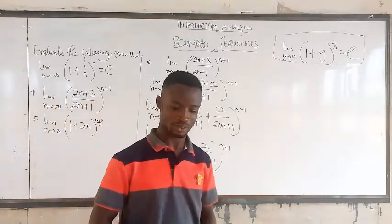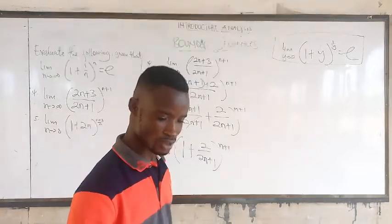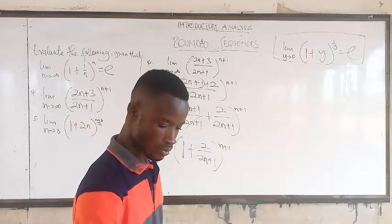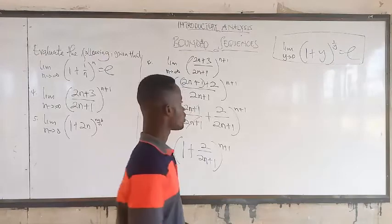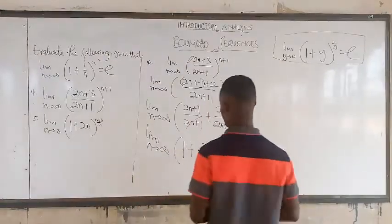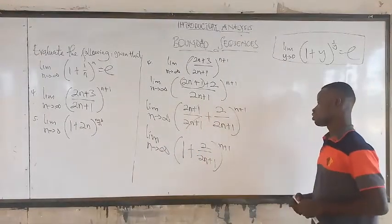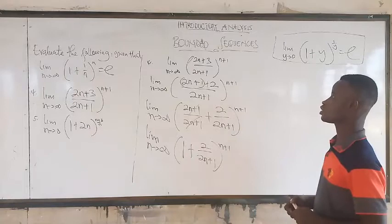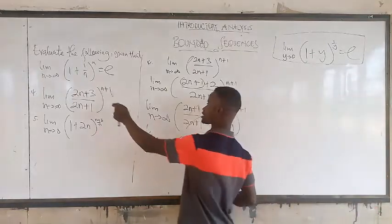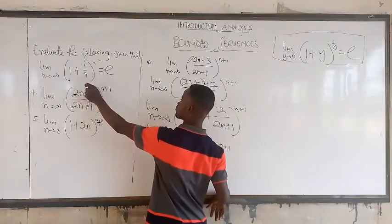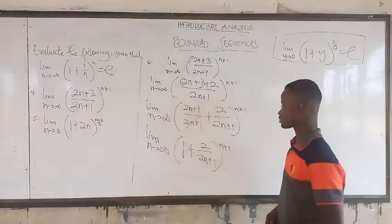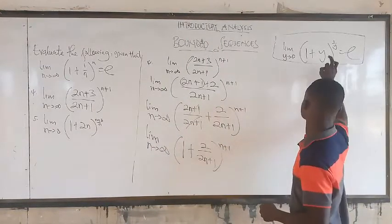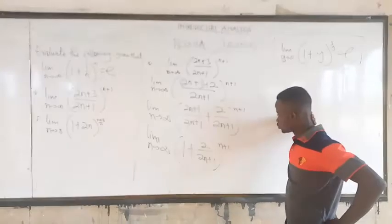We can now achieve this one because the (2n+1)/(2n+1) terms will cancel. So we get the limit as n approaches infinity of (1 + 2/(2n+1)), all to the power n plus 1. Very good. So looking at what we have now — we have been able to achieve this but this is still not yet in the standard form.